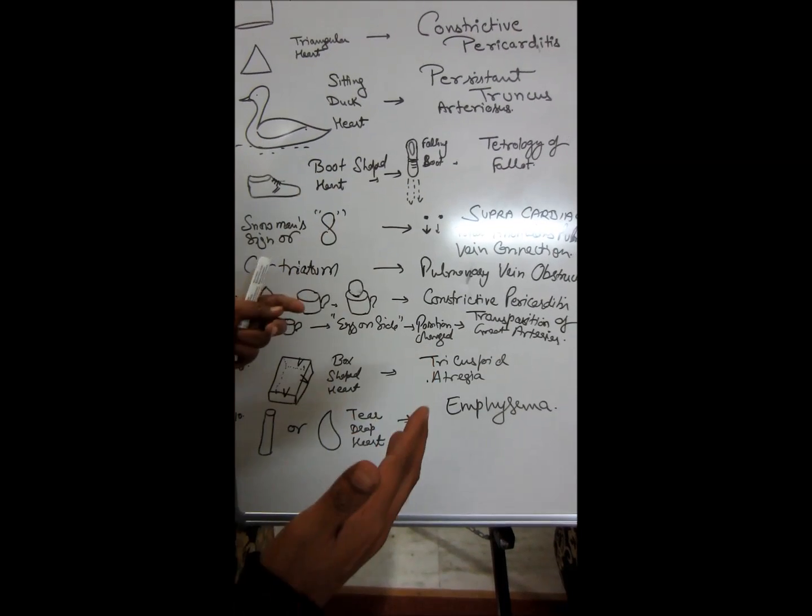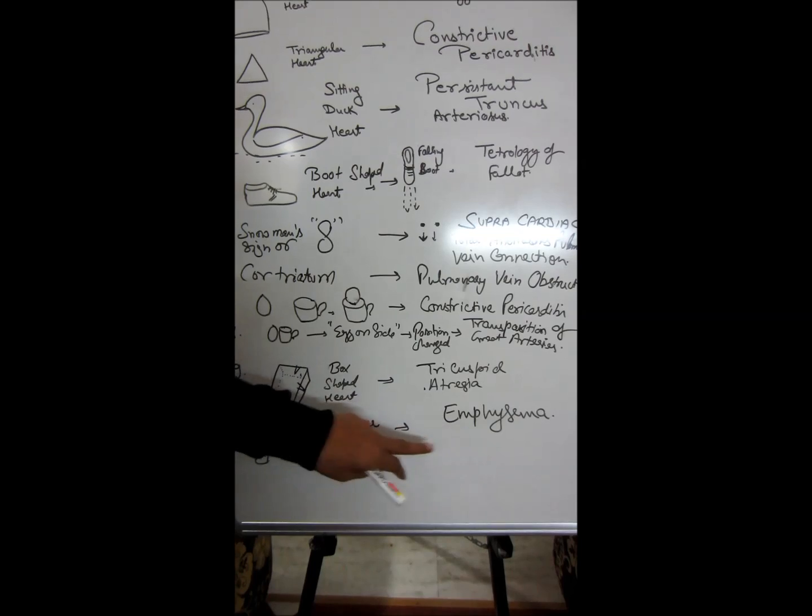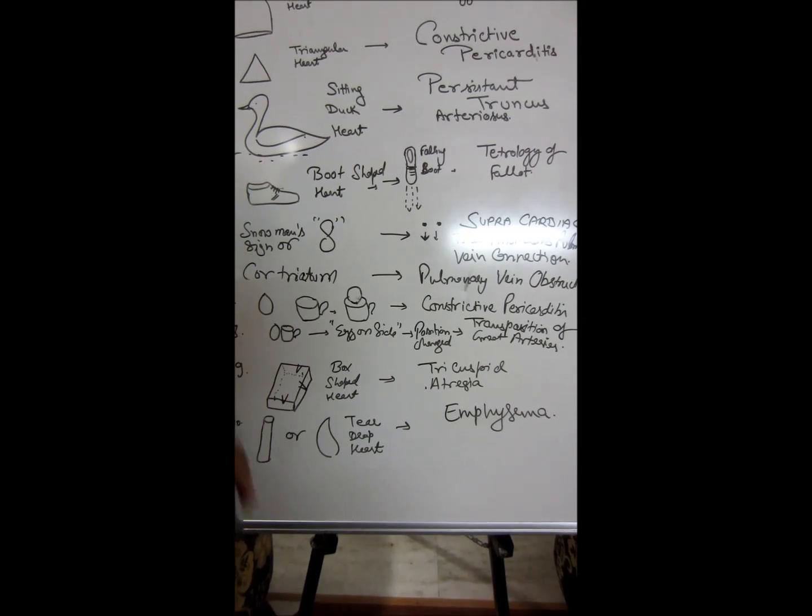As you can remember, a tubular heart shape is seen in emphysema. Tear drop heart is seen in chronic emphysema. Thank you.